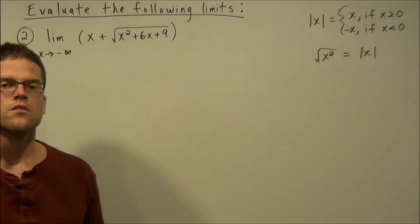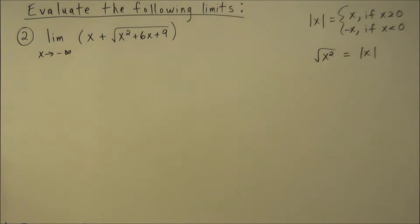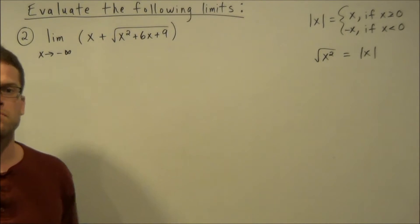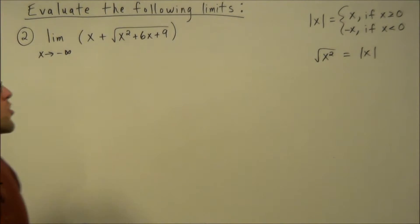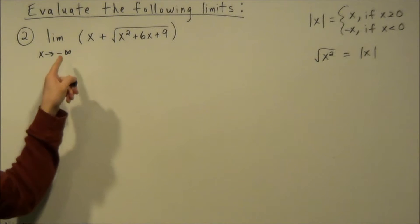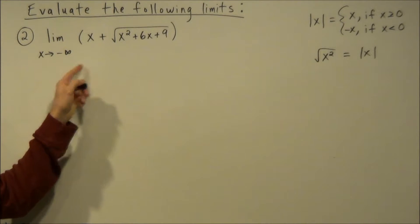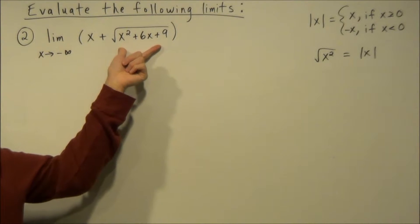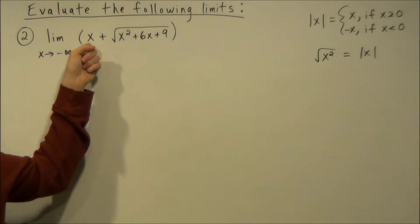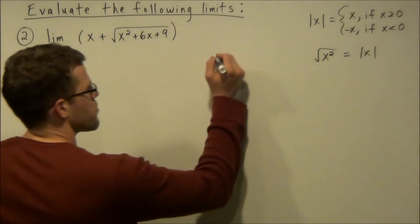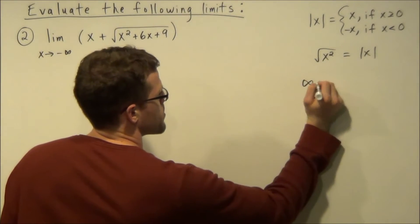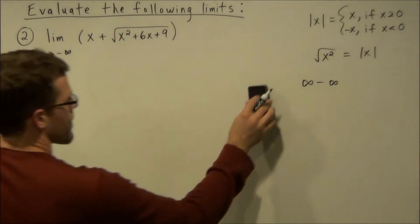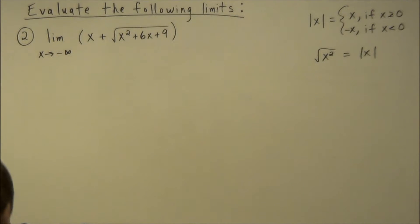For our second example we have the limit as x goes to negative infinity of x plus the square root of x squared plus 6x plus 9. Plugging in a value approaching negative infinity, the radical term goes to positive infinity while x goes to negative infinity, giving the indeterminate form infinity minus infinity. This tells us we need to work algebraically to get terms to cancel.